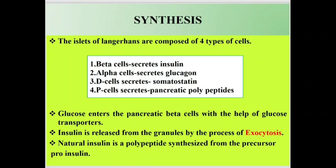Normally insulin is synthesized from beta cells of the islets of Langerhans. The islets of Langerhans are composed of four types of cells: beta cells, alpha cells, D cells, and P cells. Beta cells secrete insulin, alpha cells secrete glucagon, D cells secrete somatostatin, and P cells secrete pancreatic polypeptides.